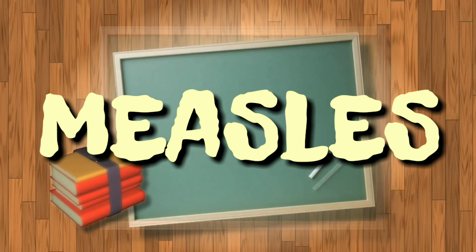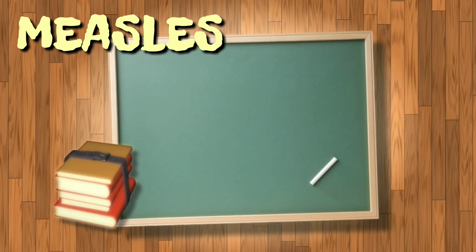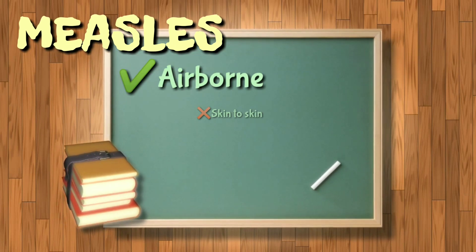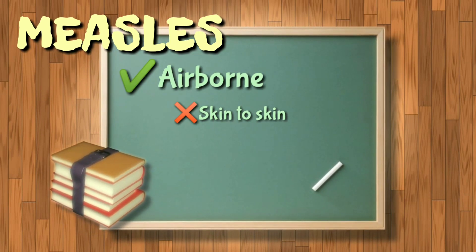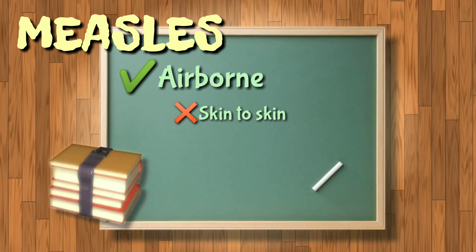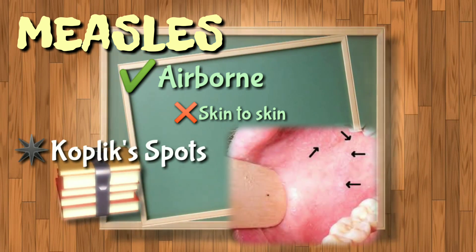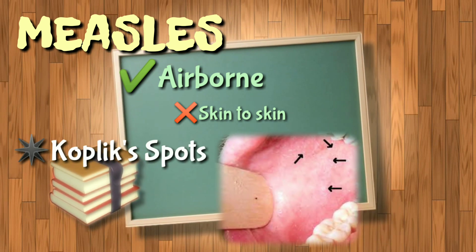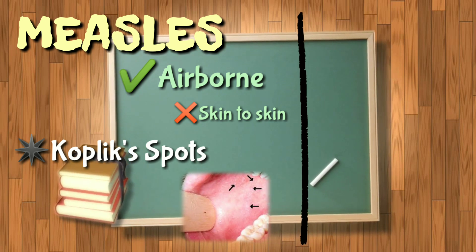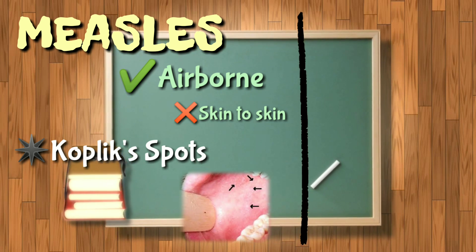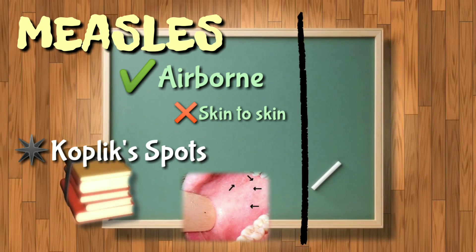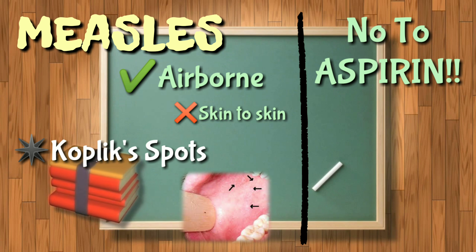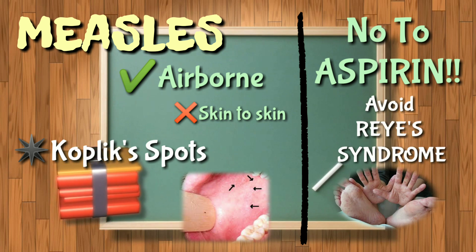First and foremost, a very common disease is measles. Measles is transmitted through airborne and skin-to-skin contact, along with its pathognomonic sign: the Koplik spots. Also remember, if you have a child with suspected measles, do not give aspirin — this is to prevent the occurrence of